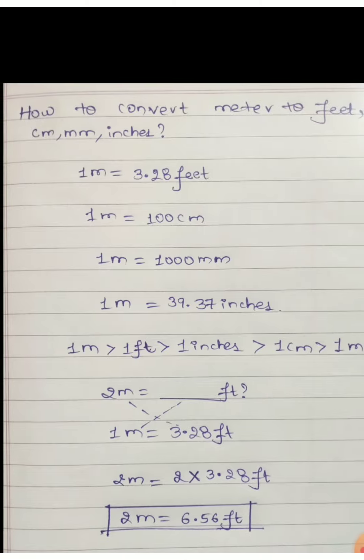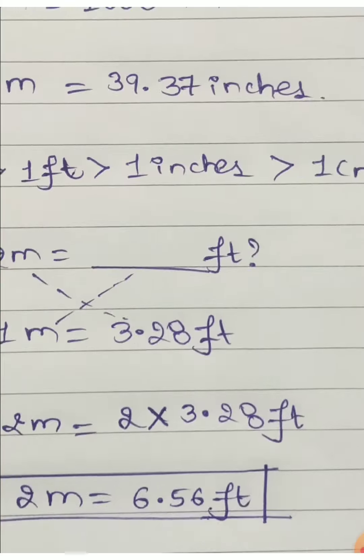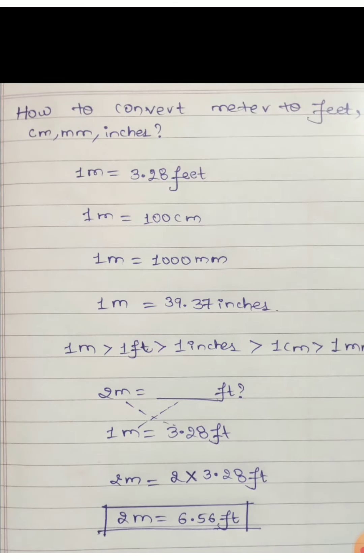example, two meters equals how many feet? We know that one meter equals 3.28 feet, so cross multiply. Two meters will equal two into 3.28 feet, which gives us 6.56 feet.